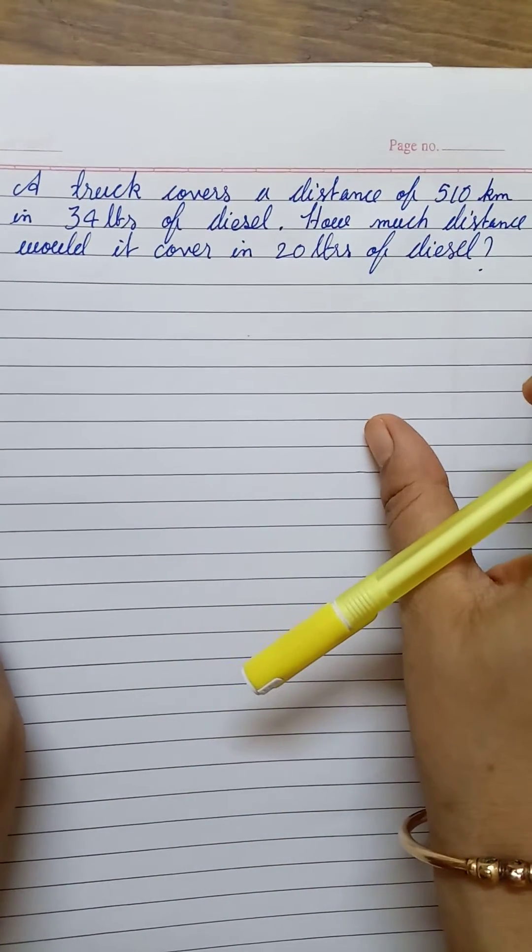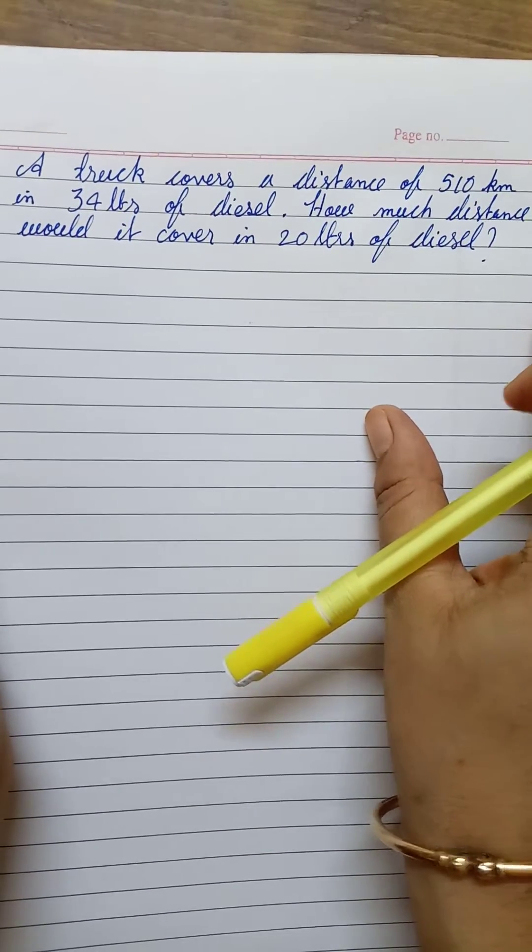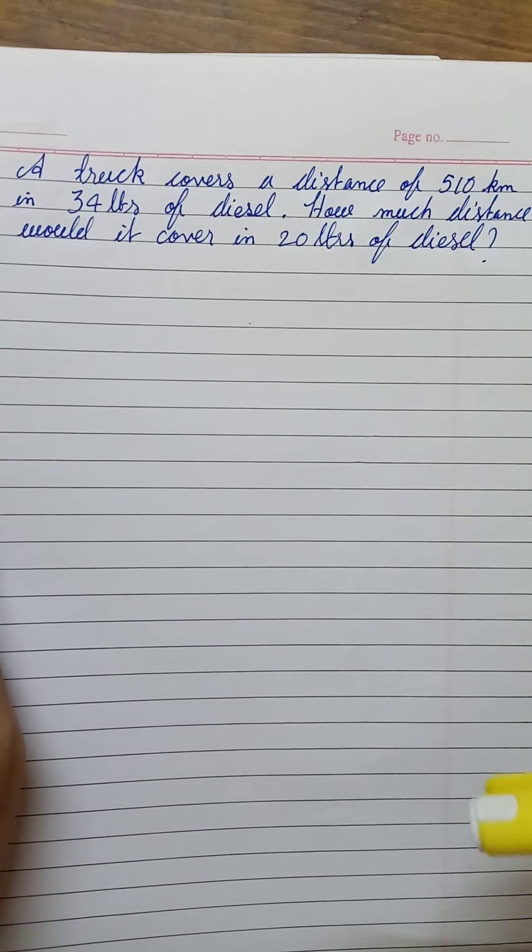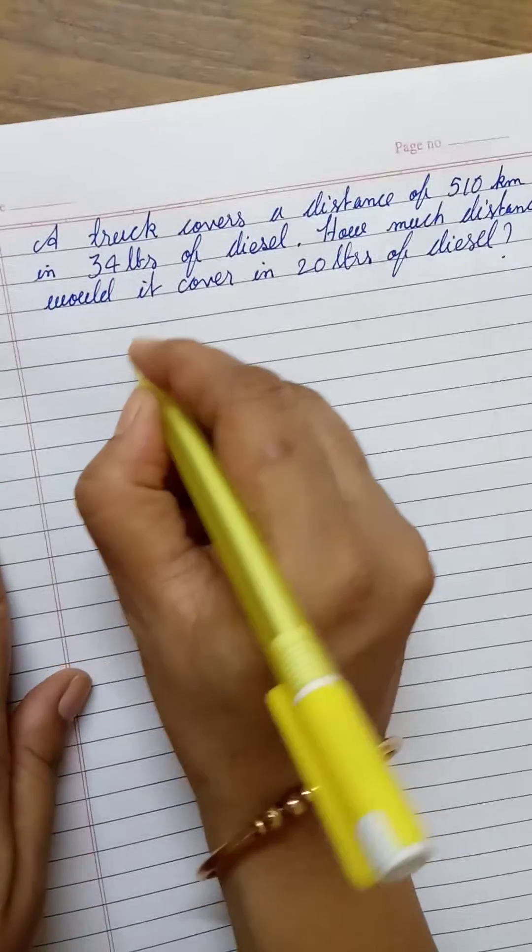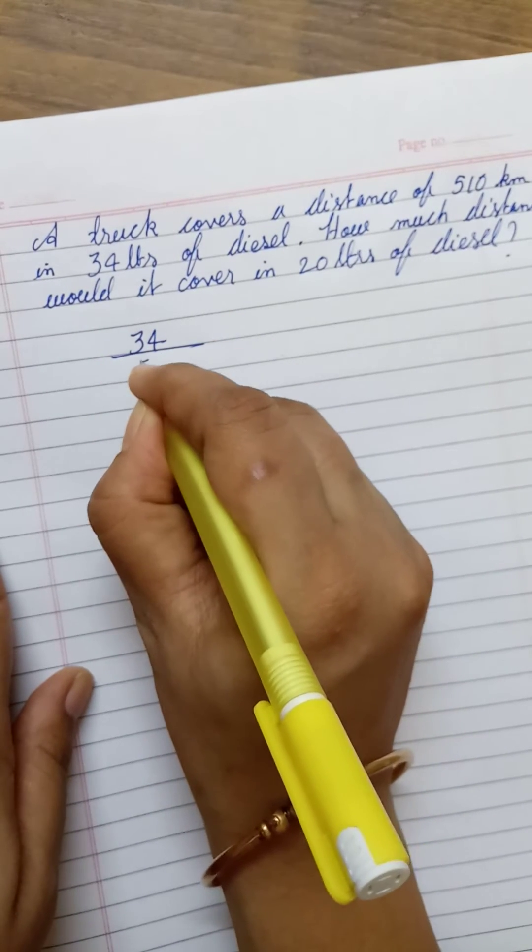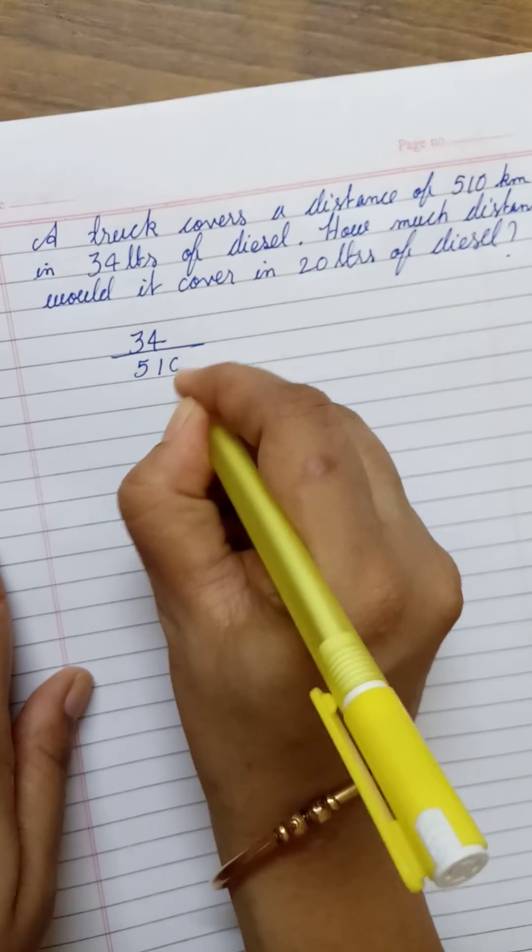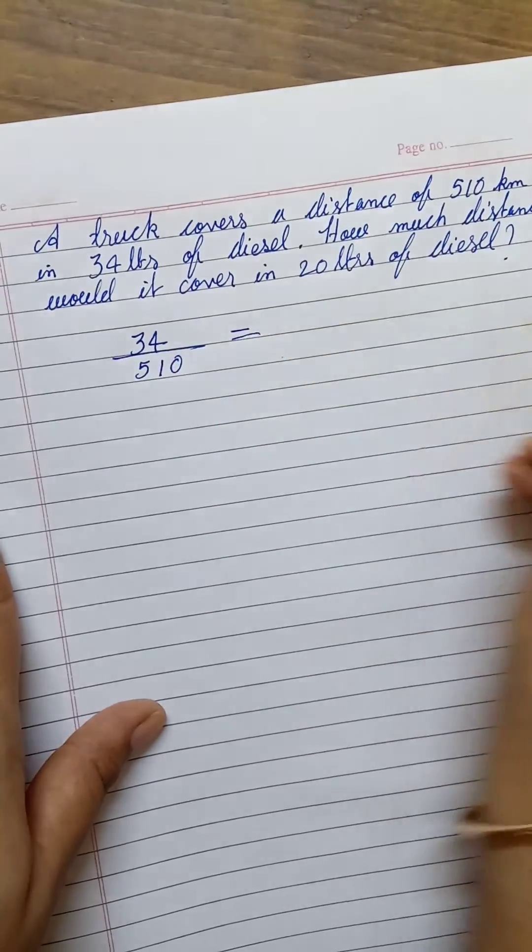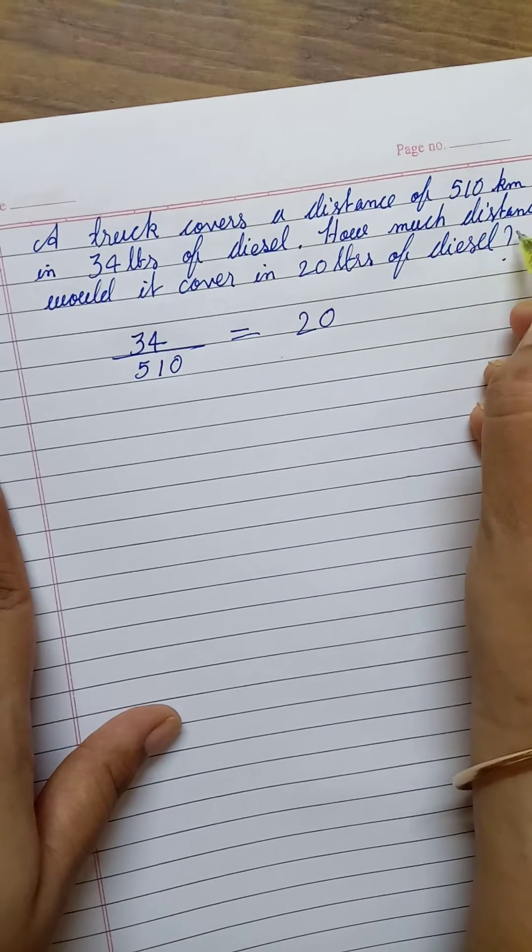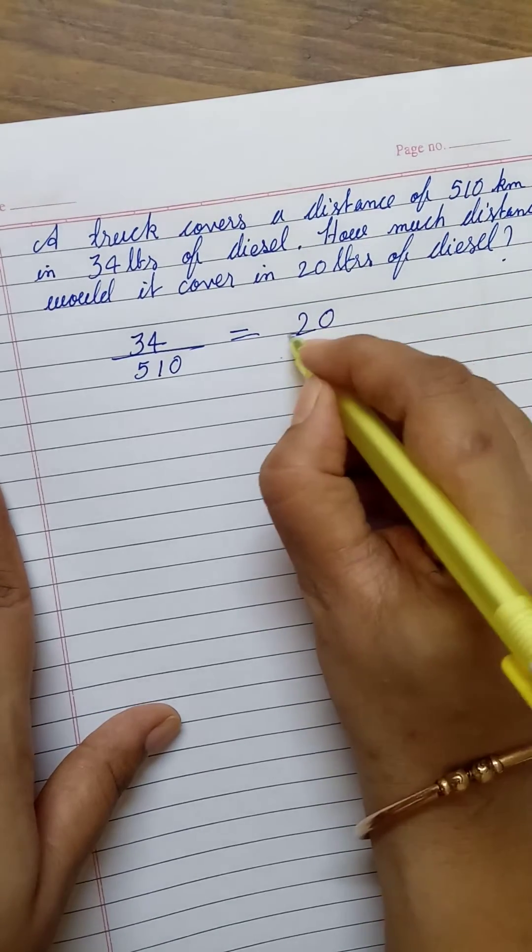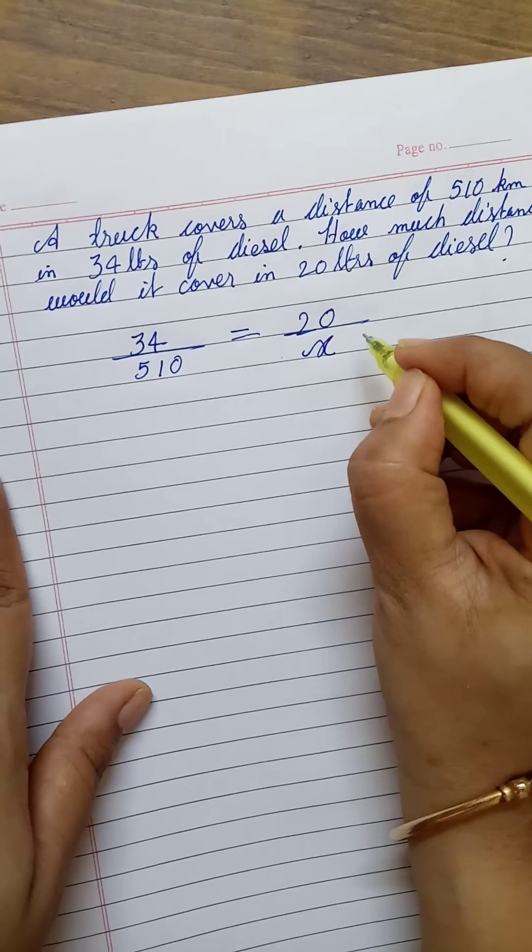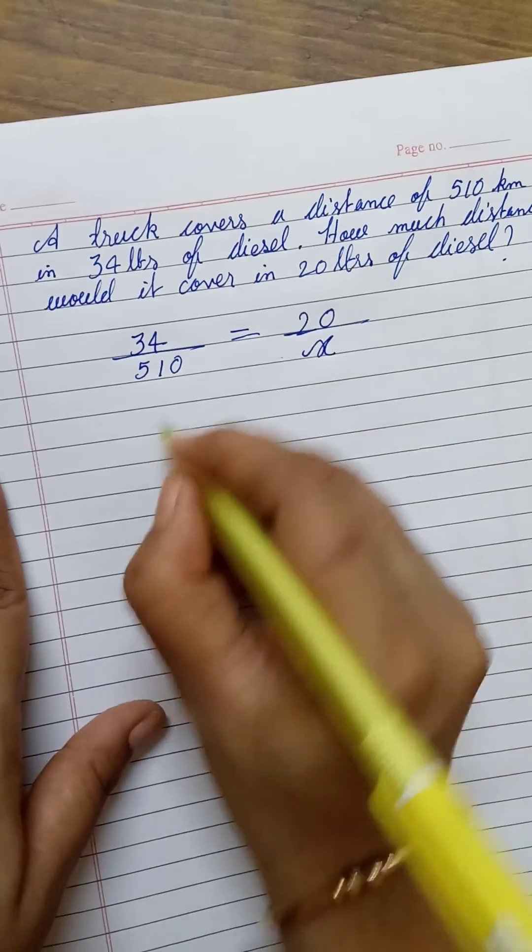Here we have the question: a truck covers a distance of 510 kilometers in 34 liters of diesel. In 34 liters of diesel, the distance traveled is 510 kilometers. How much distance would it cover in 20 liters of diesel? Let's find out and let the distance be x. Let's work it out.